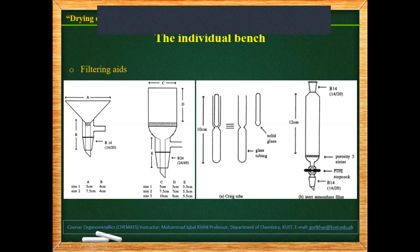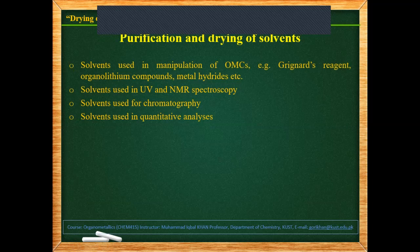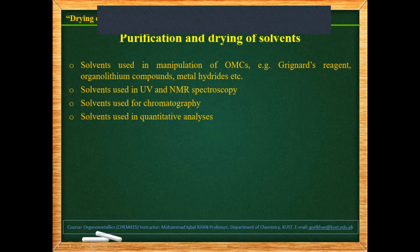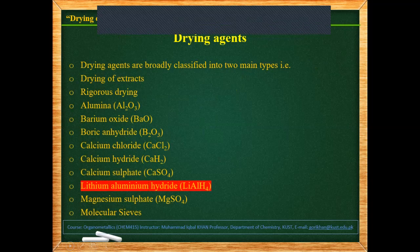We move on to purification and drying of solvents. There are basically four reasons why we need solvents in an inorganic or organic chemistry lab: solvents used for the manipulation of air-sensitive compounds like organometallic compounds; solvents that are very pure and dry for UV and other spectroscopic data; solvents used for chromatographic procedures; and solvents used for quantitative analysis of substances. Drying agents are broadly classified into two types: general-purpose drying agents for extracts, and rigorous drying agents.